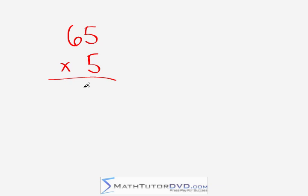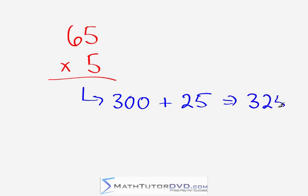Our next problem is 65 times 5. We're going to take 6 times 5 gives us 30, but it's not really 30, it's 300. We have to add a 0 because of the placeholder here. We're going to add to that 5 times 5 gives us 25. And lo and behold, the answer is 325.